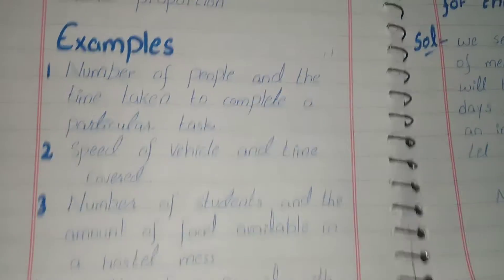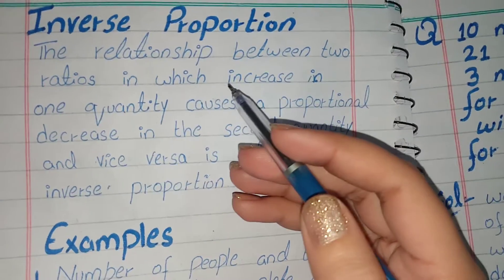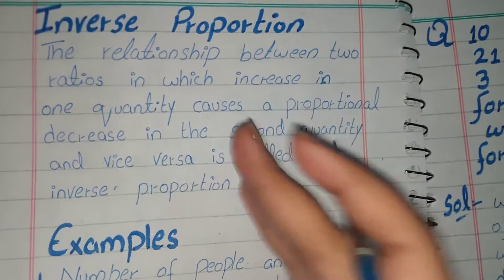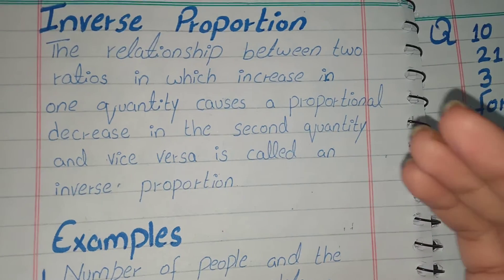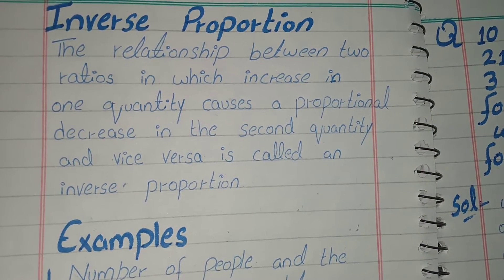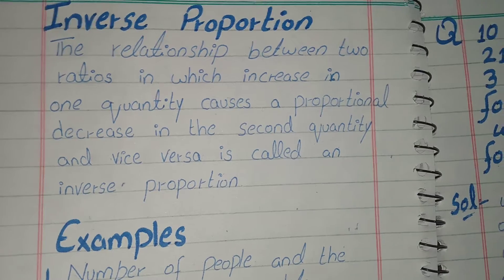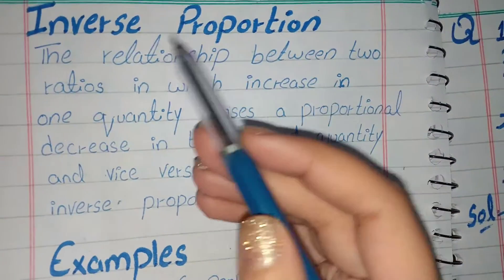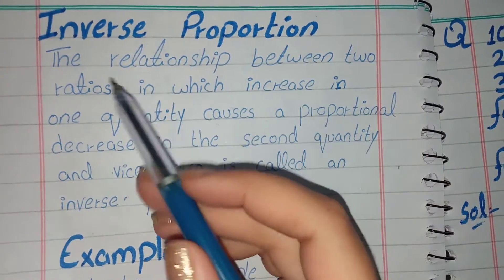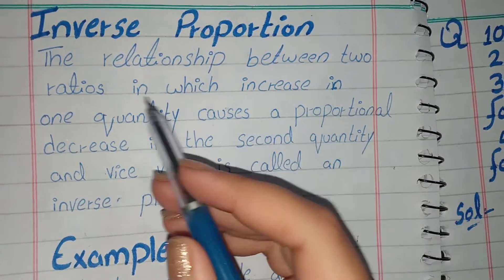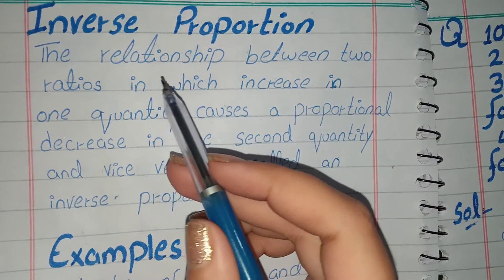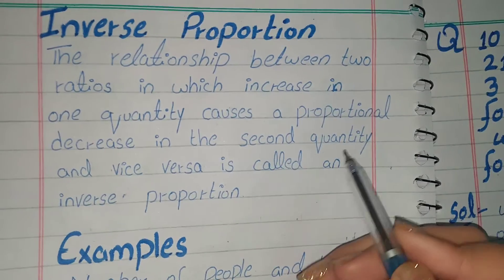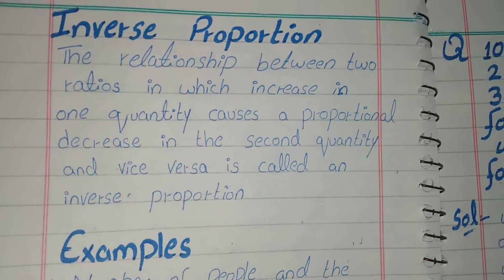In inverse proportion, if we increase one quantity then the other quantity decreases, or if one quantity decreases then the other quantity increases. This is the relationship between two ratios in which an increase in one quantity causes a proportional decrease in the second quantity and vice versa. We call it inverse proportion.